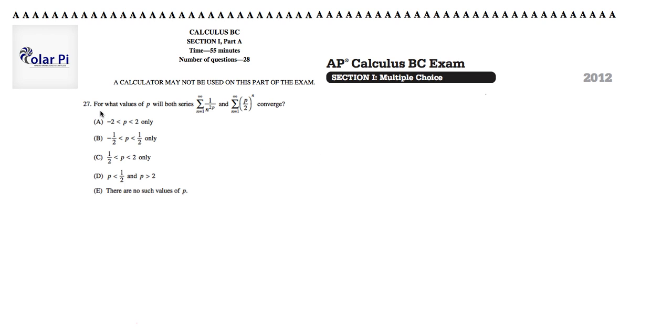Hi, welcome. In this video, we're going to go through problem 27. In problem 27, it says, for what value of p will both series this and this converge? So why don't we look at the task as one at a time?